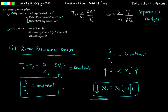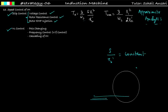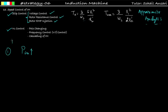The disadvantages of rotor resistance control are: by increasing the rotor resistance, the rotor copper loss increases, which is the first disadvantage. Also, the efficiency of the induction motor will decrease as a consequence.